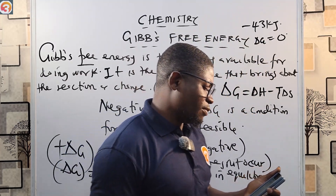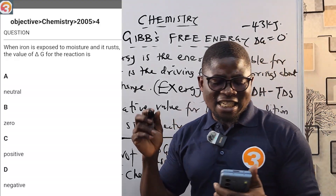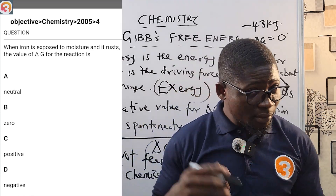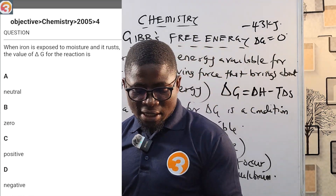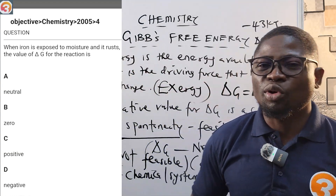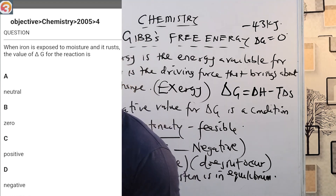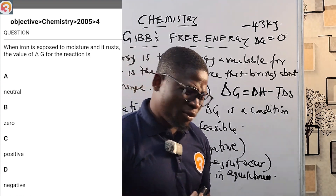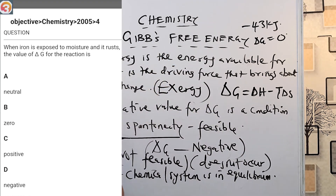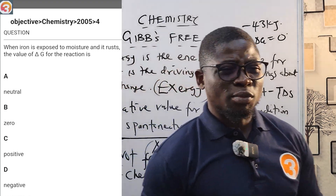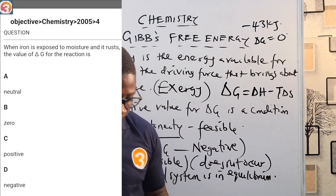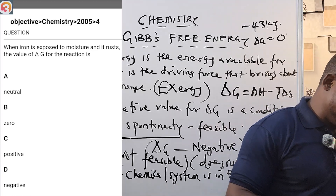Another question from 2005, number 4: when iron is exposed to moisture and rusts, what is the value of ΔG for the reaction? Options are neutral, zero, positive, or negative. The answer is D — negative — because rusting is a spontaneous process that occurs on its own without extra energy input. For spontaneous processes, ΔG is always negative.